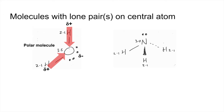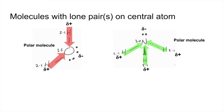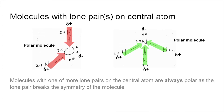Another example is ammonia, NH3. We've got three identical dipoles operating in these directions, but because of the lone pair on nitrogen, the symmetry is broken and these can't cancel. The hydrogens are all slightly positive, the nitrogen is slightly negative, and therefore this is a polar molecule. The key thing to remember is that molecules with one or more lone pairs on the central atom are always going to be polar, because the lone pairs break the symmetry and the dipoles can't cancel.